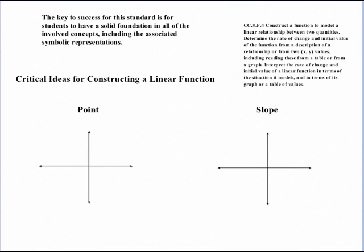The critical ideas for constructing a linear function really revolve around two things: a point and the slope. The problem with just having a point to work with is that I can actually have an infinite number of lines that go through that one point. So that's not enough information.